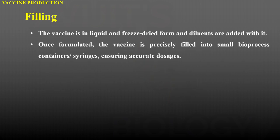The next step is filling. The vaccine is in liquid and freeze-dried form, and diluents are added with it. Once formulated, the vaccine is precisely filled into small bioprocess containers or syringes, ensuring accurate doses — meaning the syringes are filled according to the required doses.